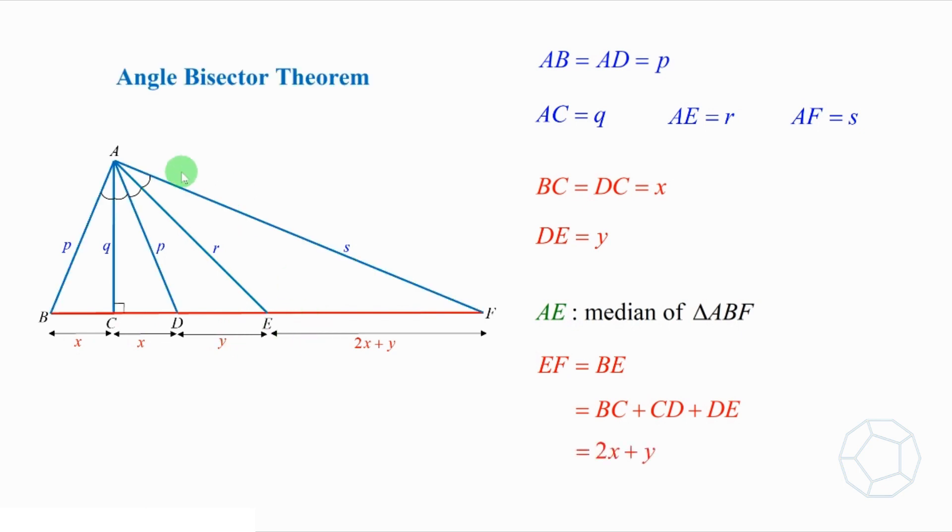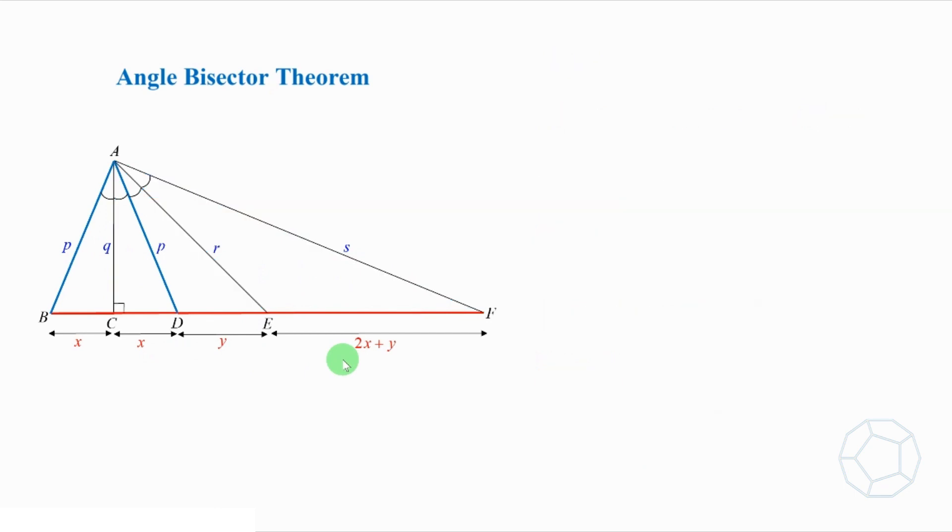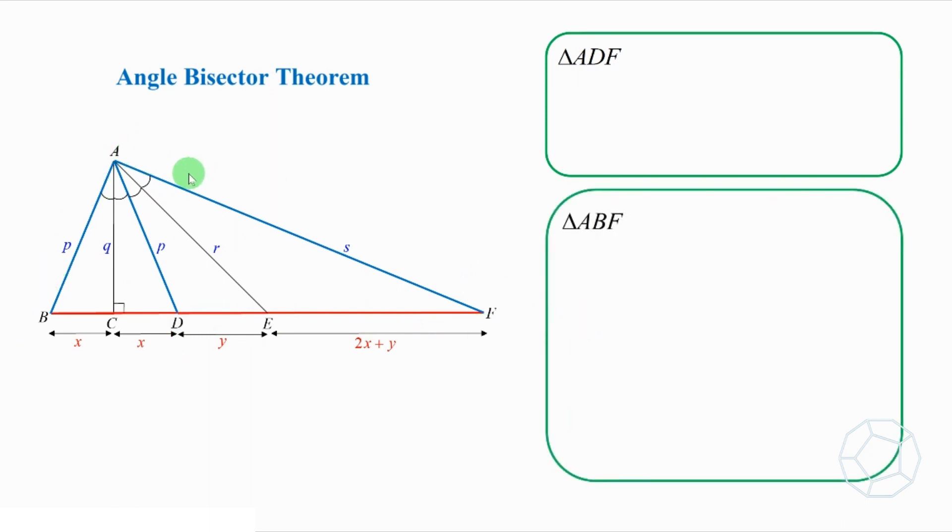Alright, we can apply the angle bisector theorem. Bear in mind that the ratio of blue sides is equal to the ratio of the red sides. Let's choose two triangles with some equal sides. The calculation will be much simpler. Here, AB equals AD equals P. Take the side AF as well. We shall consider triangle ADF and triangle ABF. In the following, the angle bisector is in green for easy reference.